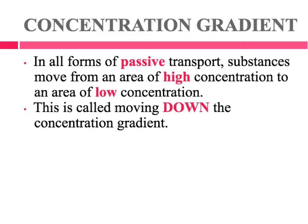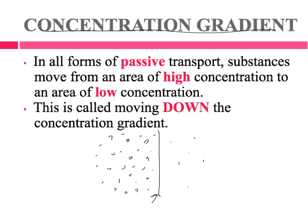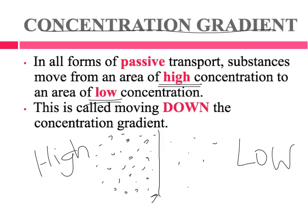In order to have diffusion occur, we have to have what's called a concentration gradient. A concentration gradient means that you have more of something on one side and less of it on the other side. So here's our semi-permeable membrane — on this side we have a lot of particles, and over here we have a few of them. This is our area of high concentration, and this is our area of low concentration. In passive transport, substances travel from high concentration to low concentration — that is called moving down the concentration gradient.